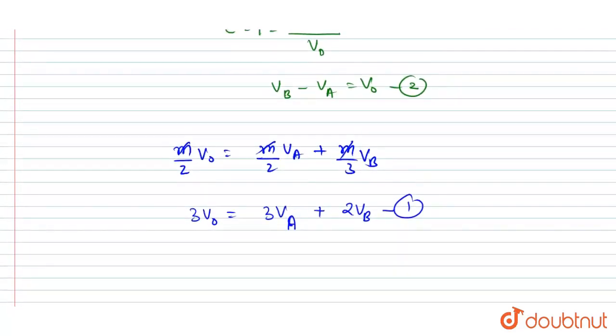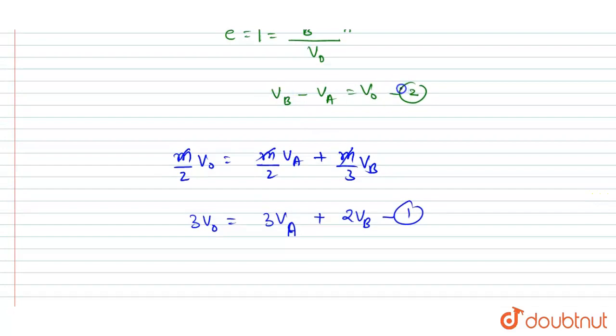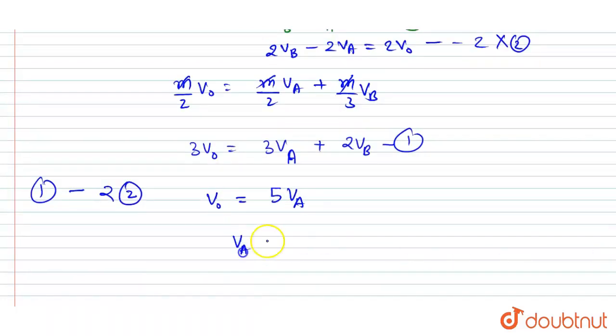Equation 2 is vᵦ - vₐ = v₀. Now let's solve it for vₐ. So we can cancel out this vᵦ by multiplying equation 2 with 2 and after multiplying by 2, you can subtract this equation from equation 1 so that vᵦ will get cancelled out. So I will write equation 1 minus 2 times equation 2. So you will get v₀ equals 5vₐ. So from here you will get the vₐ value as v₀/5.